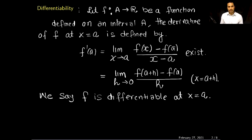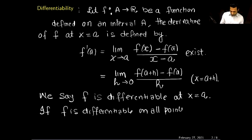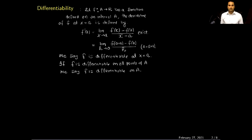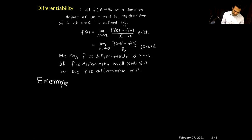Next I will give you an example of a differentiable function and also an example of a function which is not differentiable. For the first example, I will consider F(x) = x^n where n belongs to the set of natural numbers.